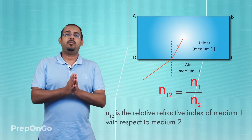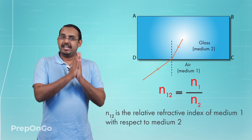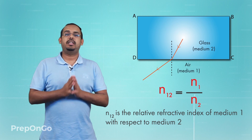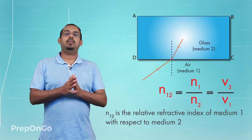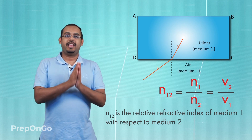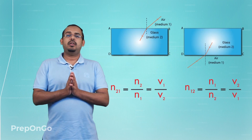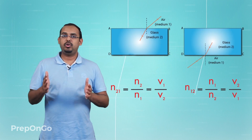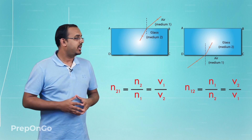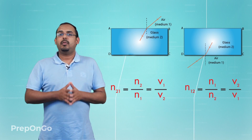Similarly, n12 — or n1 upon n2 — is the relative refractive index of medium 1 with respect to medium 2, where light is traveling from medium 2 to medium 1. This value is given by the ratio v2 upon v1. So n1 upon n2 equals v2 upon v1, also represented as n12. This is the concept of relative refractive index, where we calculate either n12 or n21 depending on the direction of light travel, using the ratios of their velocities.